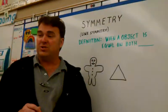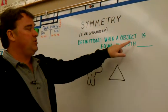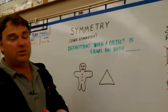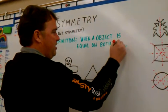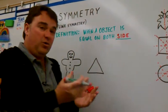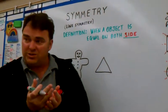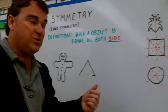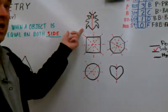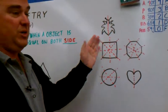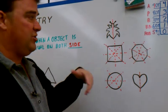Our definition for symmetry is when an object is equal on both sides. That means if you can fold it in half, it would be equal on one side and the other. For instance, right here we have a bug. This bug can only be folded down the middle because if you fold it any other direction, it's not going to be equal.